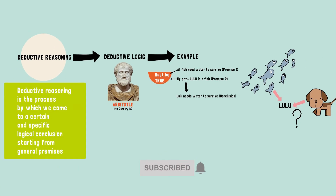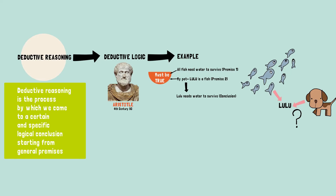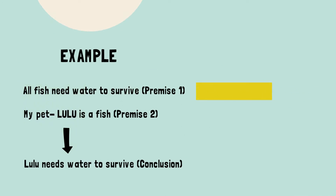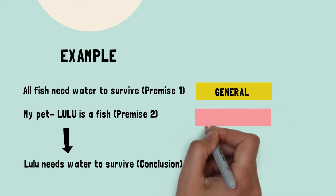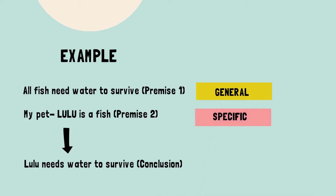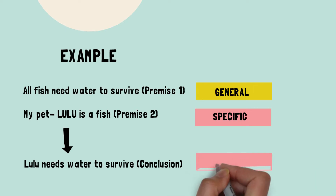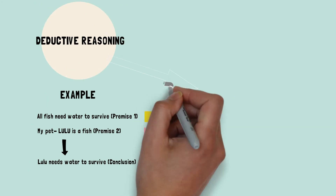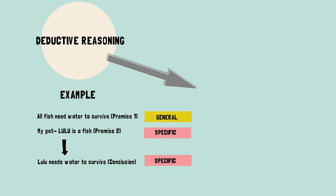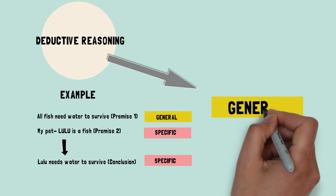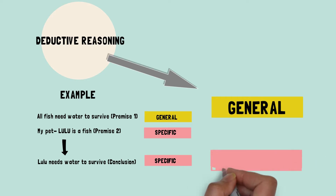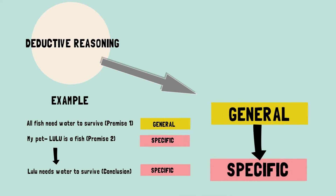The second characteristic has to do with the concepts of general and specific. All fish need water to survive — this is a general premise. My pet Lulu is a fish — this is a specific premise. Lulu needs water to survive — this is a specific conclusion. So in deductive reasoning, the approach is top-down, meaning that we move from general to specific.